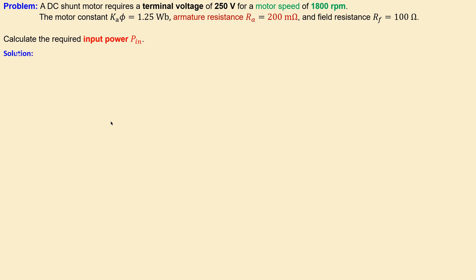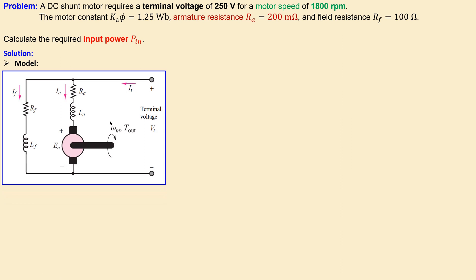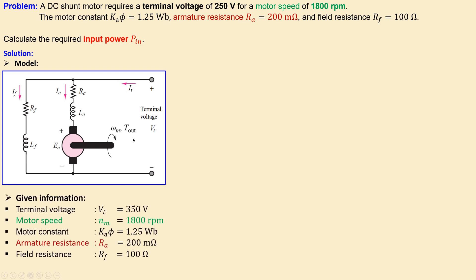So let's look at our solutions and again we begin with a model. This is our DC shunt motor model. This is the field which is shunt, then the armature part. This is the back EMF part and this is the rotation of that rotor, and this is the terminal voltage and also the terminal current. Okay, again summarizing the information: terminal voltage, motor speed, motor constant, armature resistance, and field resistance.